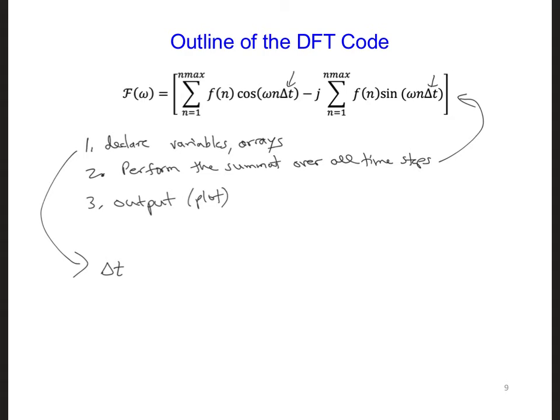Now, this dt must match the dt in the Maxwell's equations code if we want to calculate the spectrum of our source, as our Maxwell's equations code will see it. So as a result, you can probably copy over some lines from your Maxwell's equations model.